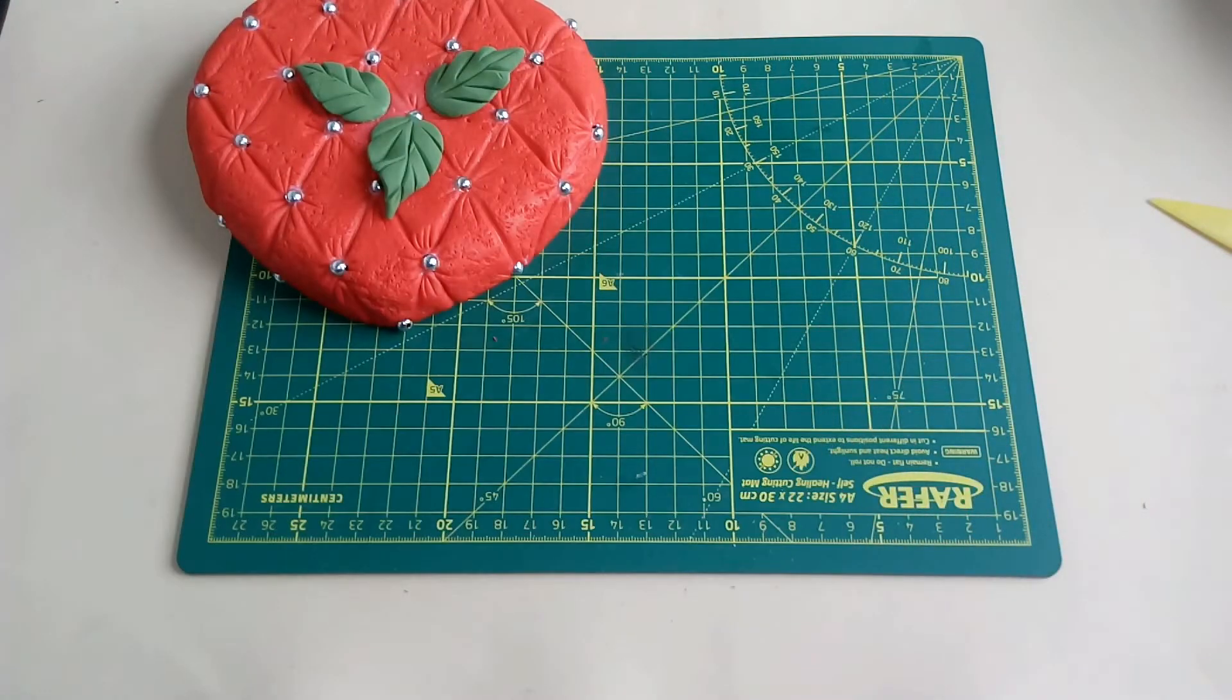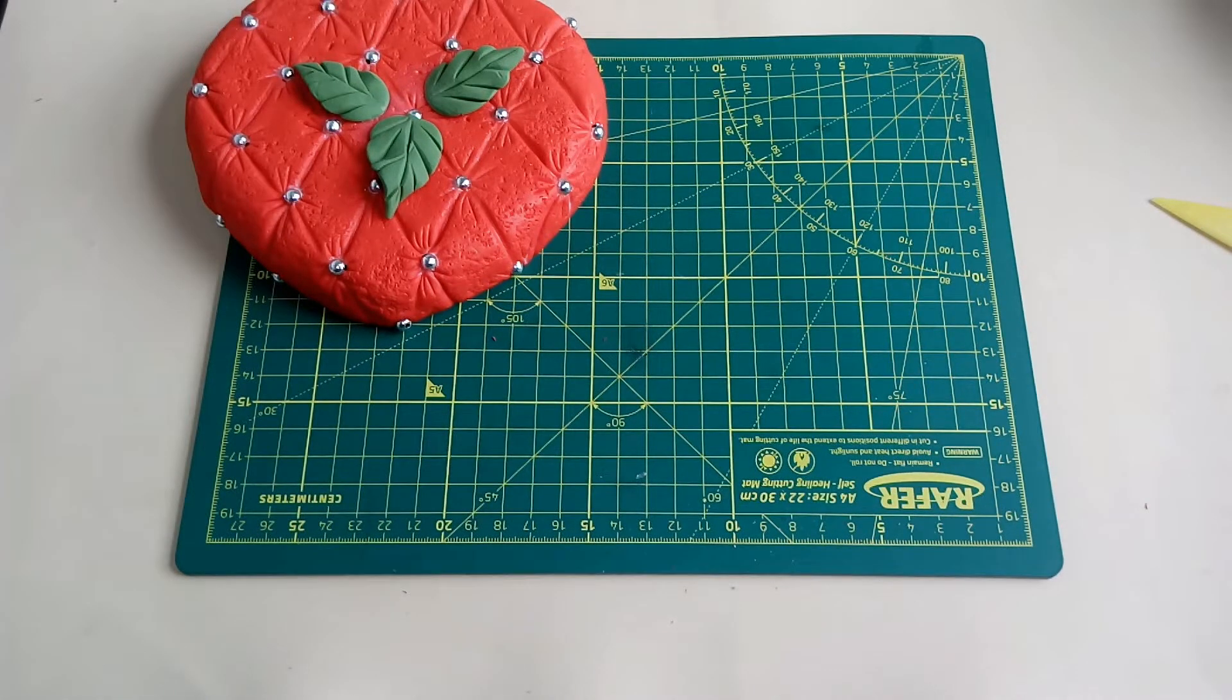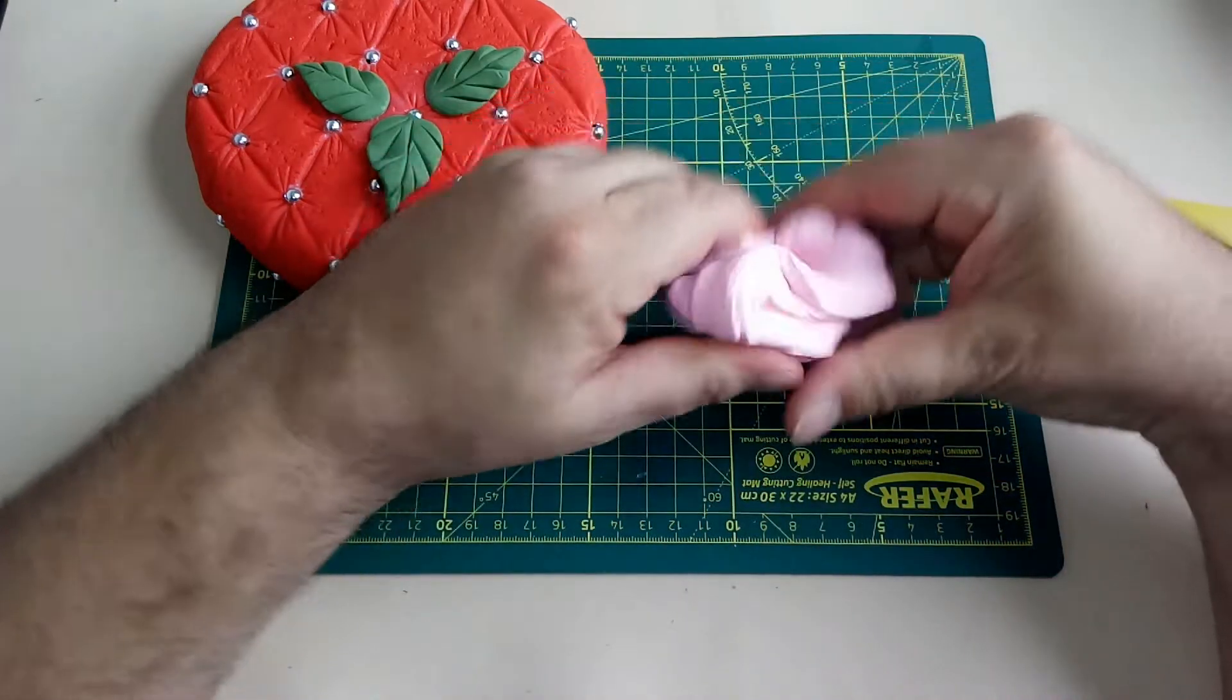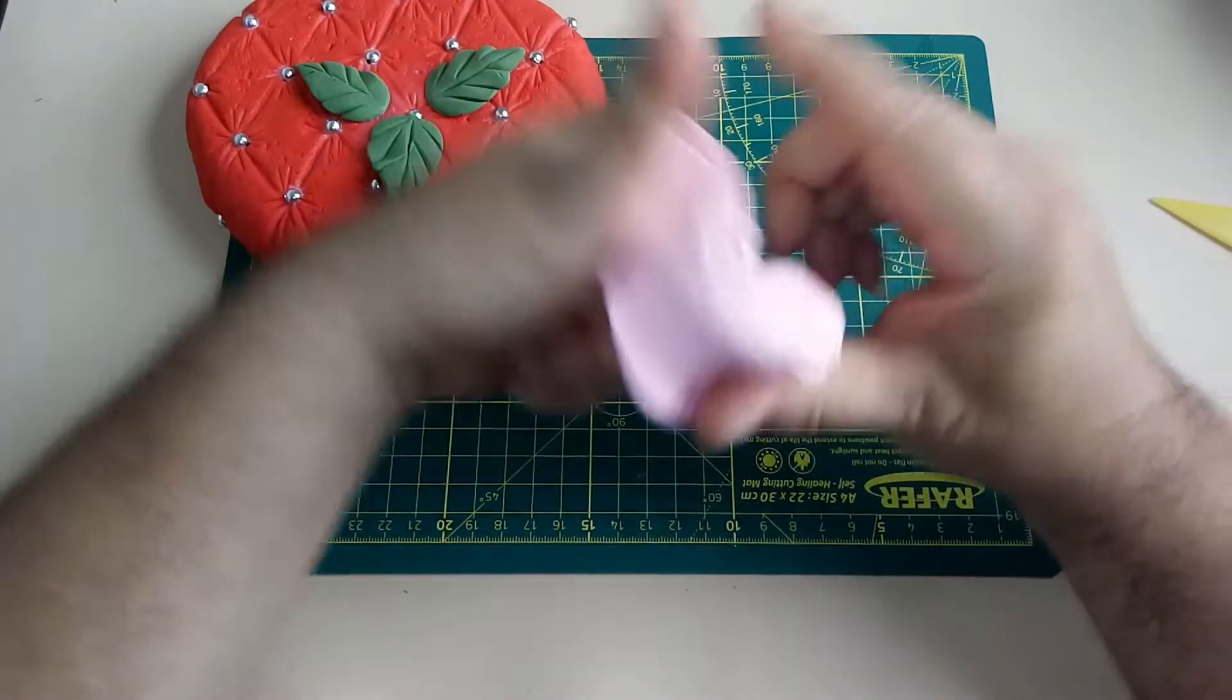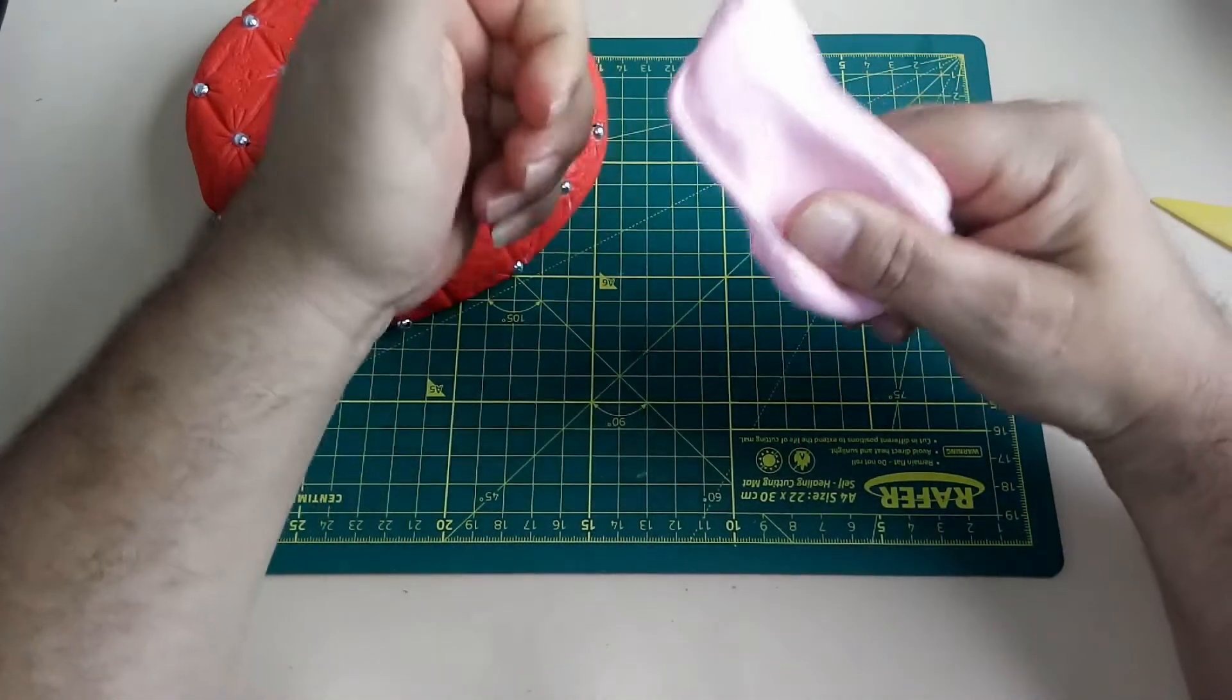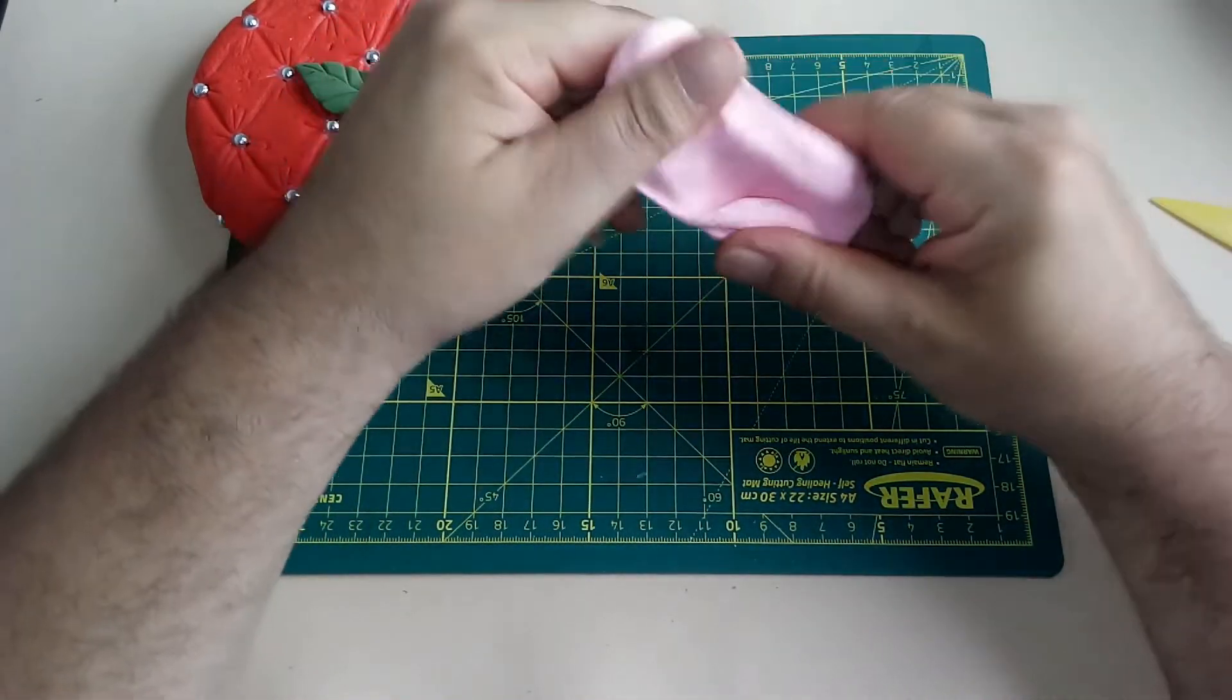Vamos a guardar la masa que sobró para que no se seque. Y acomodamos nuestras hojas, bien pegaditas ahí. Para las rosas, voy a utilizar otro tipo de masa, esto aquí se conoce como masa eva o foamy moldeable.